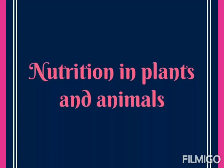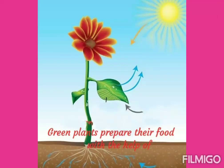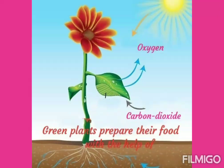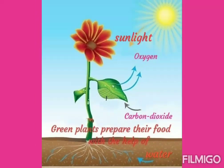Good morning students. Our topic is nutrition in plants and animals, Class 3rd EBS. Green plants prepare their food with the help of carbon dioxide, water, and sunlight.